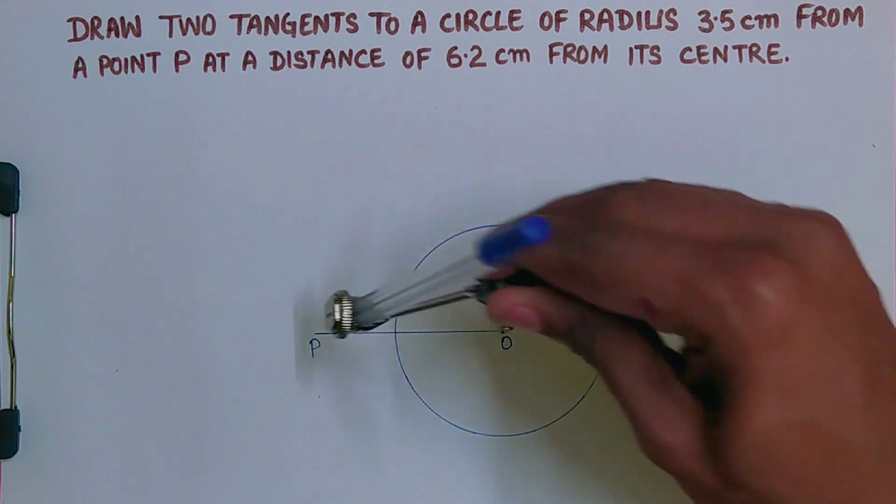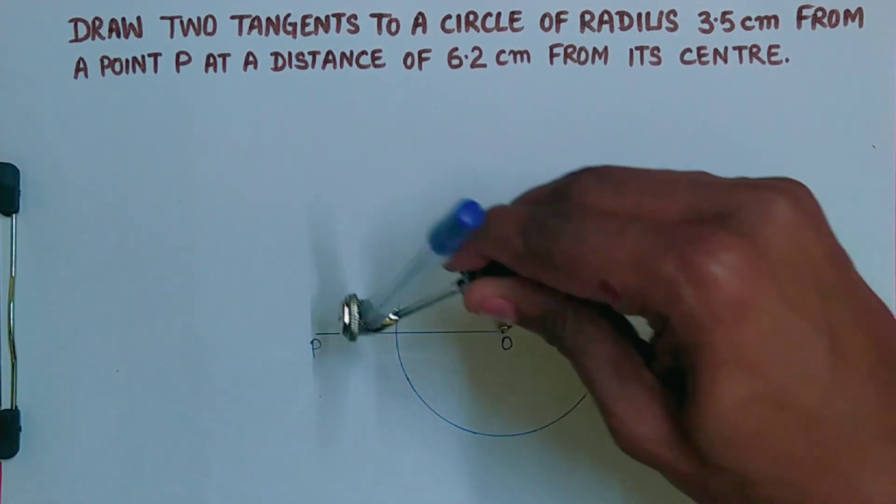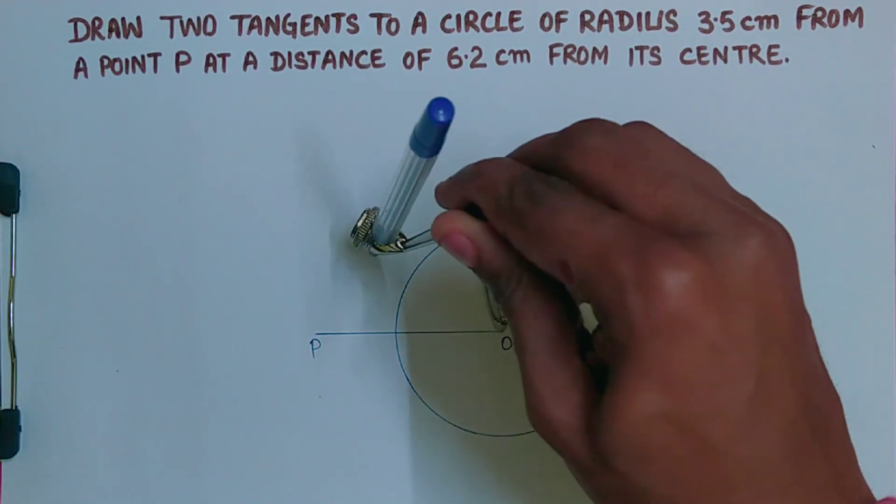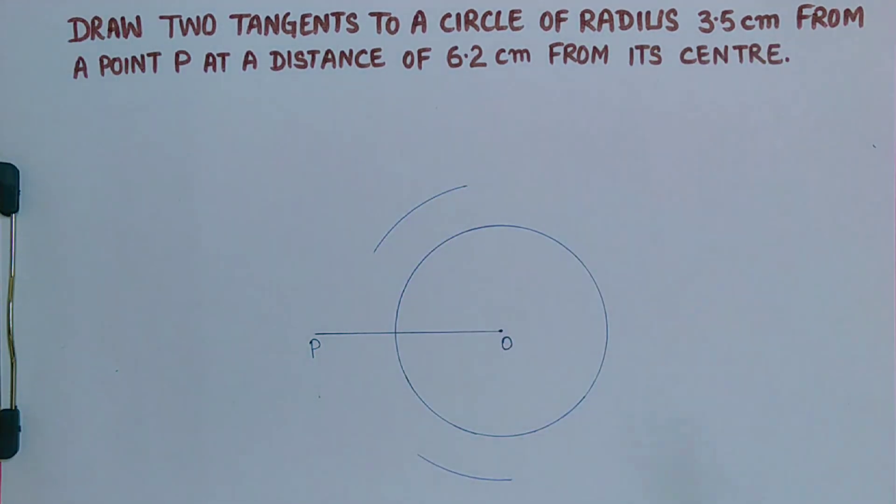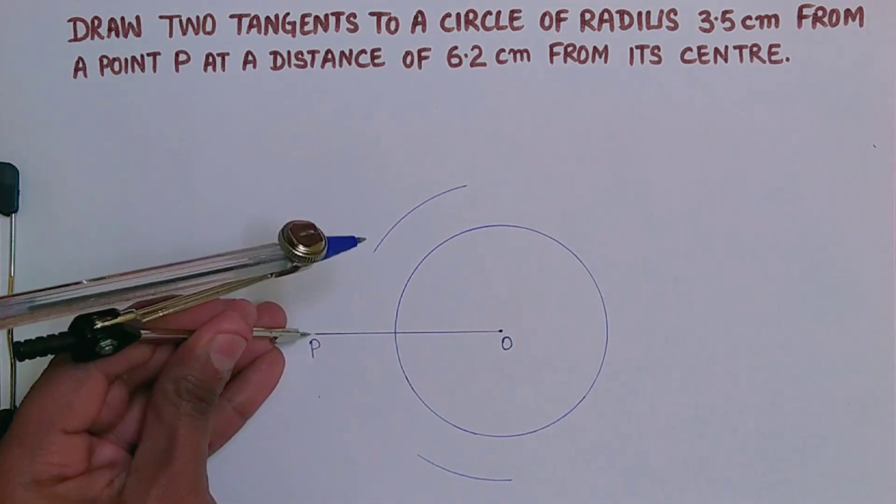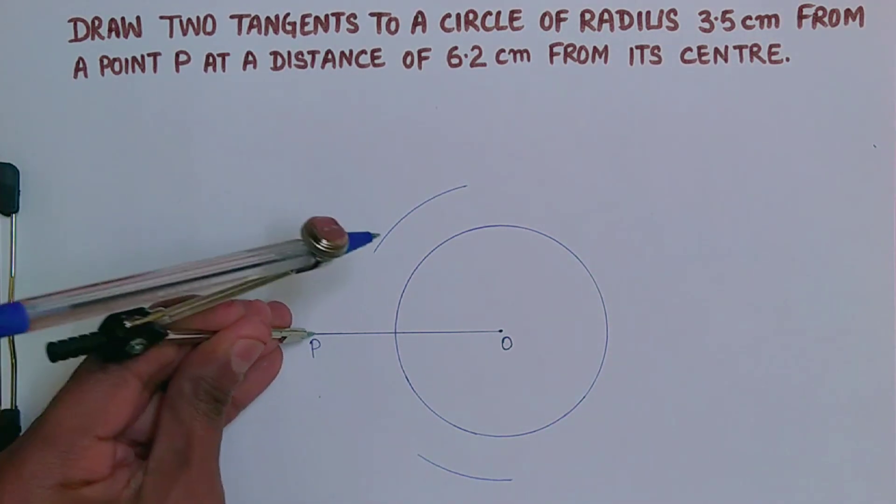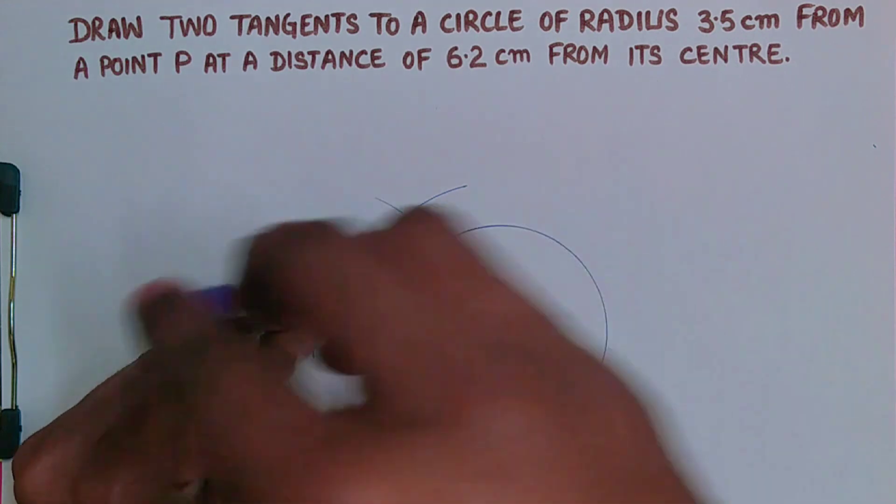For bisecting, as you know, we have to take more than half and then draw an arc here, and from point P again with the same measurement without changing you have to draw an arc here and then draw an arc here.